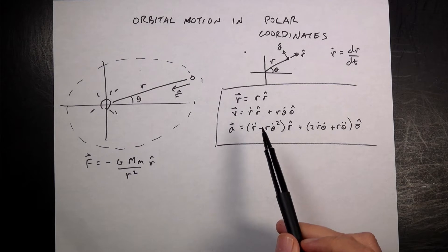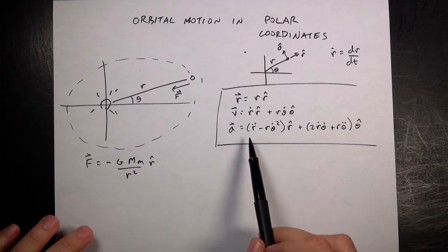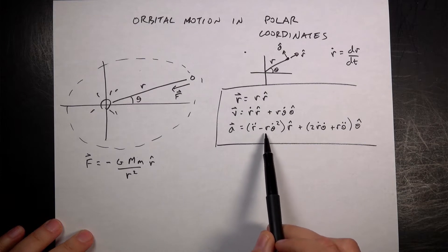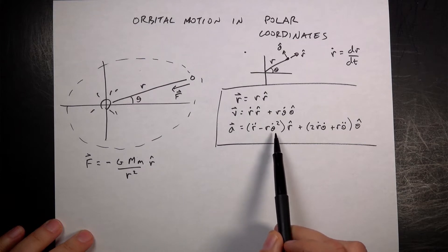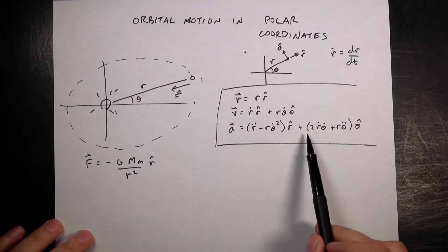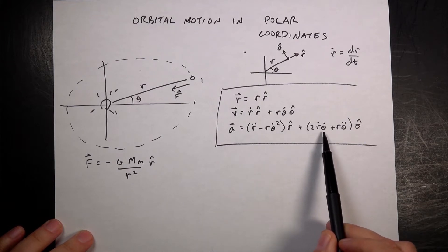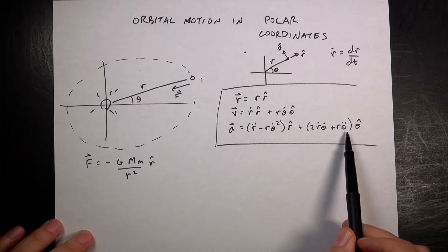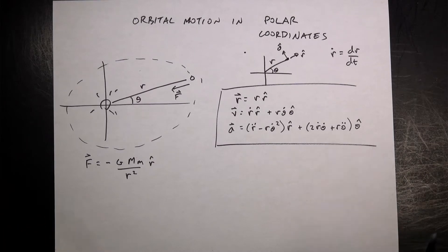Taking the derivative again gives the acceleration: (r-double-dot − r · theta-dot²) r-hat + (2 · r-dot · theta-dot + r · theta-double-dot) theta-hat.